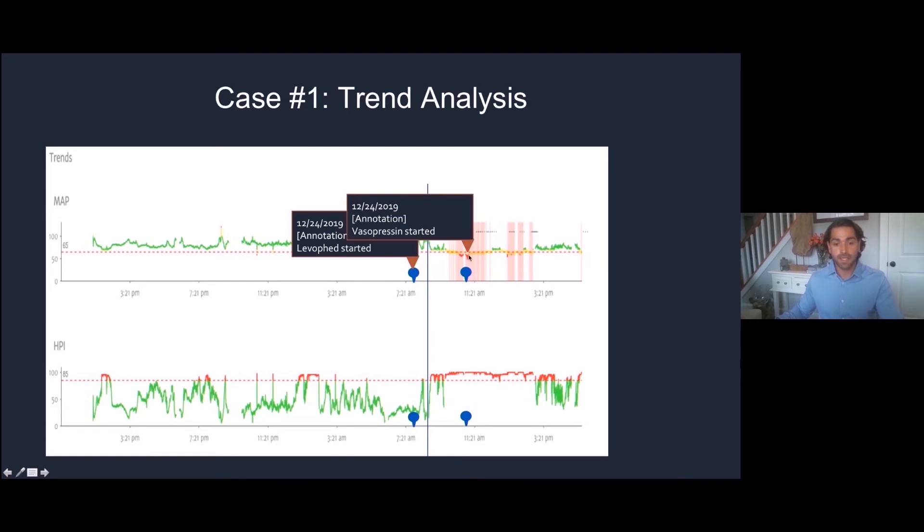We're still hypotensive. We did something else and added a second pressor. We doubled down on what we thought the appropriate treatment was. We never really got that much better until much later. Let's look at our other parameters and see if we could have done something better here.